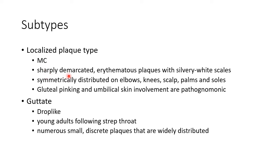Localized plaque type has sharply demarcated erythematous plaques with silvery white scales, symmetrically distributed on elbows, knees, scalp, palms, and soles. Gluteal pinking and umbilical skin involvement are pathognomonic of localized plaque type psoriasis.